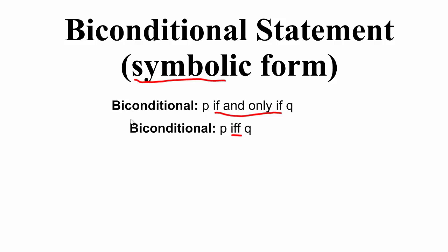A biconditional—if you look at the prefix 'bi'—actually means two, so we're talking about two conditionals. That's why we call it a biconditional, and the two conditionals that represent the biconditional are described here.